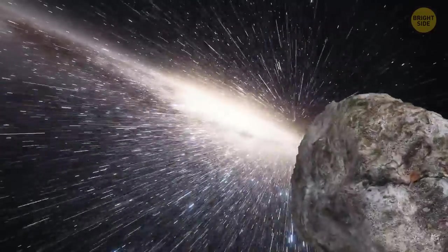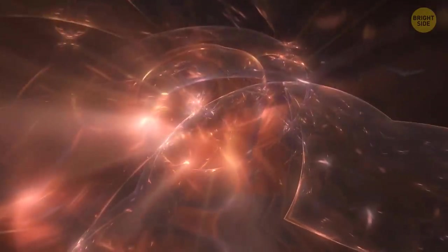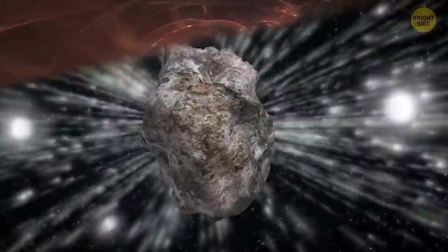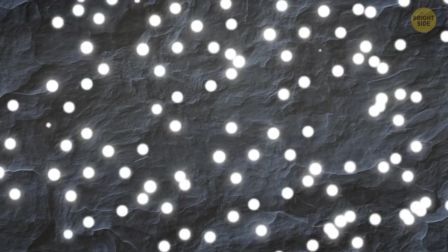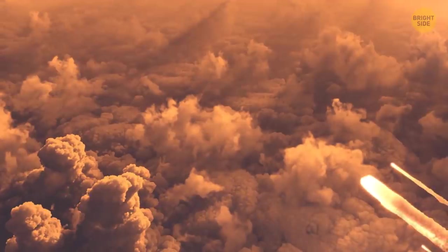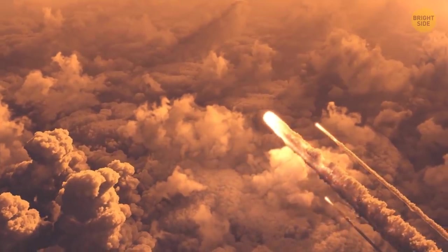Long before our solar system was formed, this asteroid flew across the vast expanses of space. About 2 billion years into its journey, the meteorite got coated in the dust from extinguished stars. After another 5 billion years of drifting, it arrived to cause a scene on Earth.